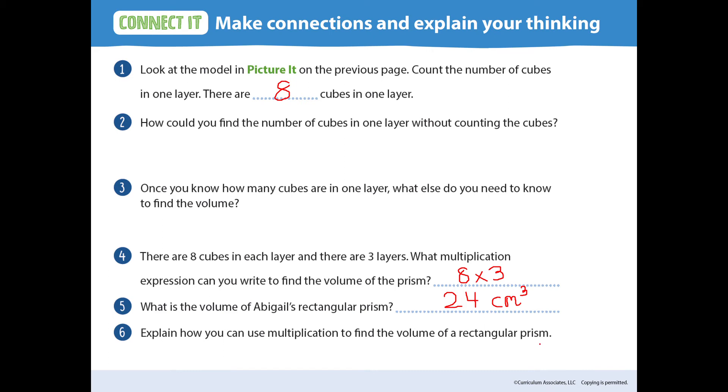Number 6. Explain how you can use multiplication to find the volume of a rectangular prism. First, you can multiply the length by the width to find how many unit cubes are in one layer. Then, you can multiply by the number of layers, which is also the height, to find the total volume.